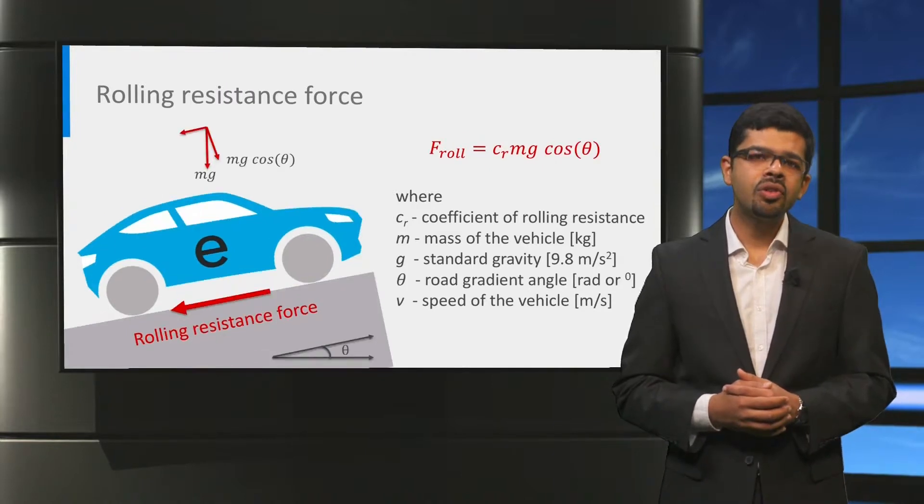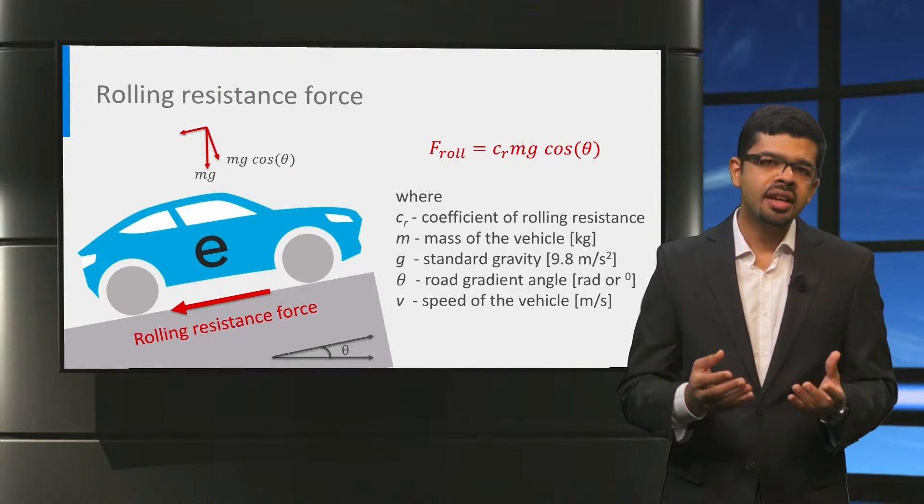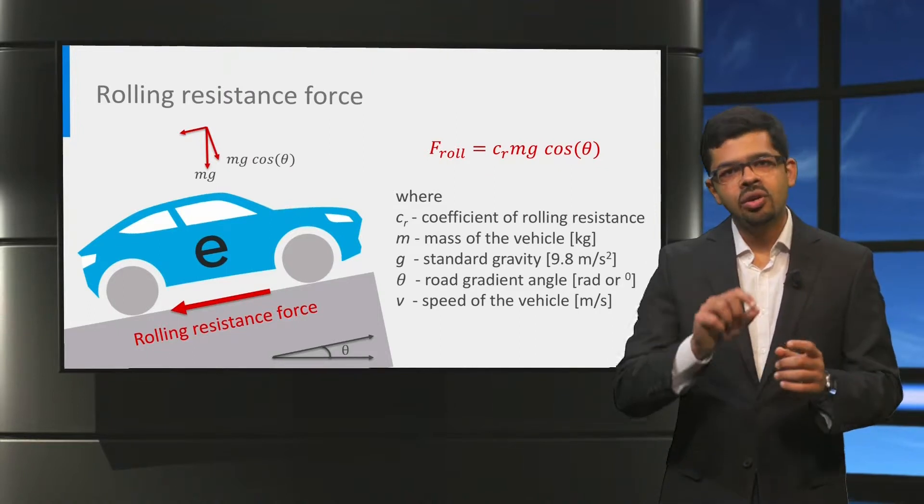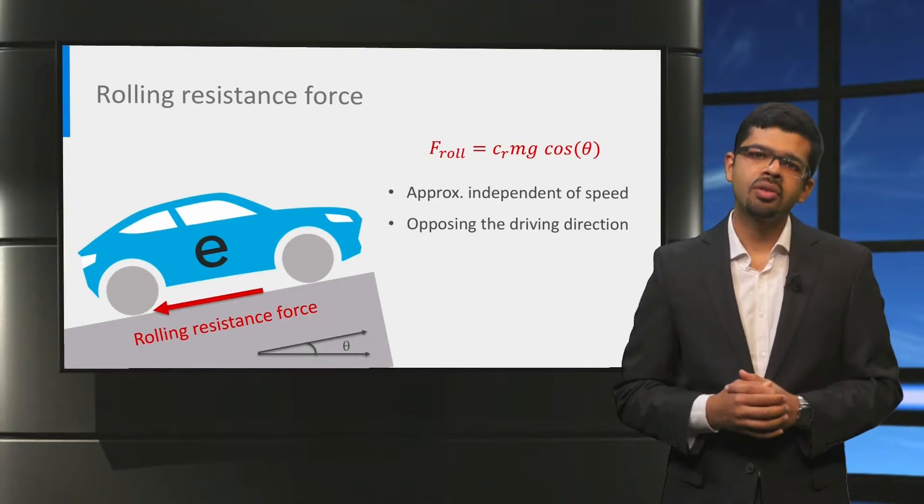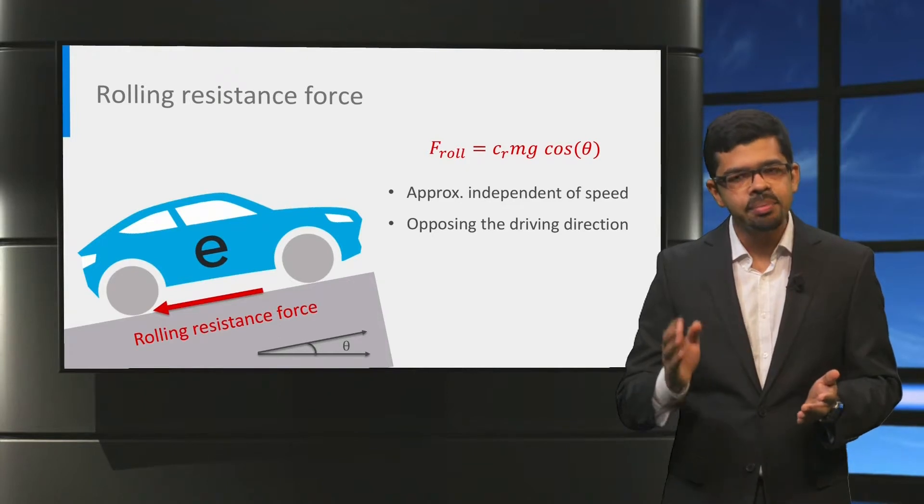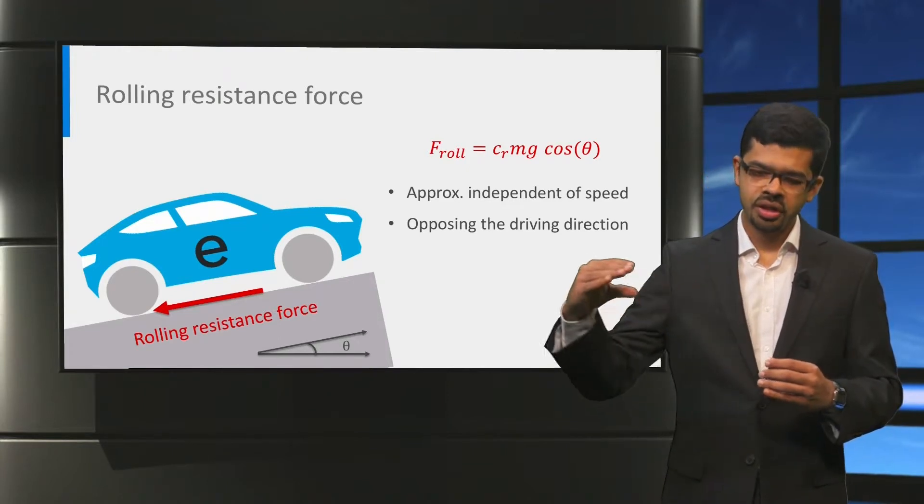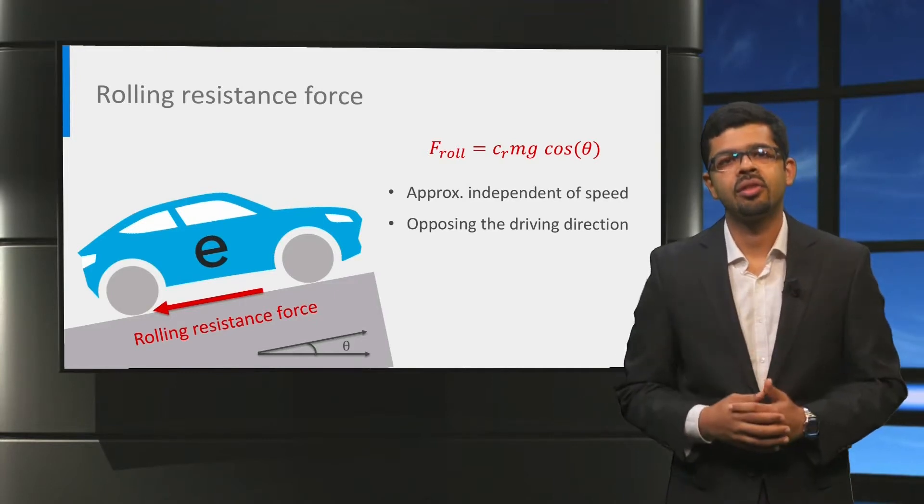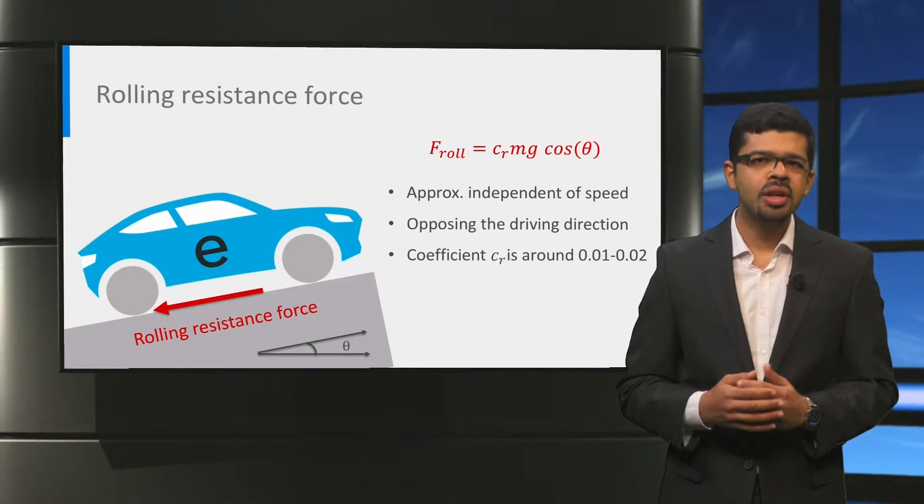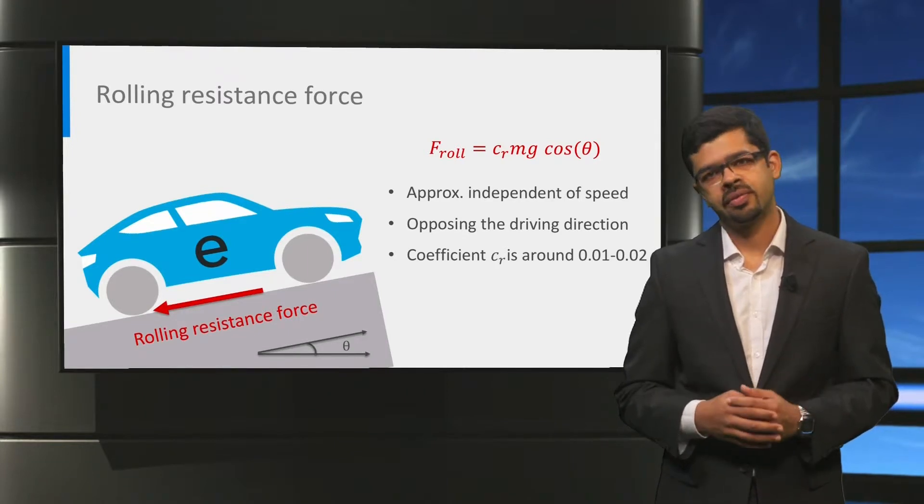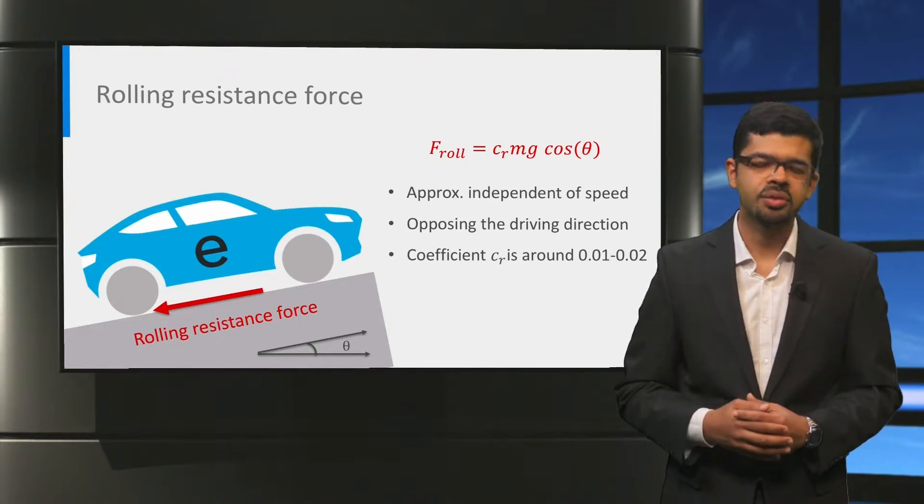In case of a road with an inclination angle θ, the normal force becomes the weight Mg multiplied by the cosine of the road angle θ. It is important to note that the rolling resistance force is independent of the vehicle speed, and it always is opposite to the direction of the vehicle. The coefficient, Cr, should be low so as to keep the frictional losses low. For modern cars, it is typically around 0.01 to 0.02.